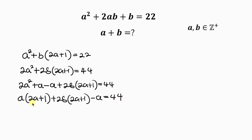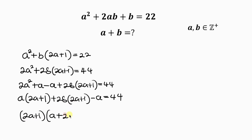Notice that (2a plus 1) is common, so I'm going to factor it out: (2a plus 1) times (a plus 2b), minus a, equal to 44.